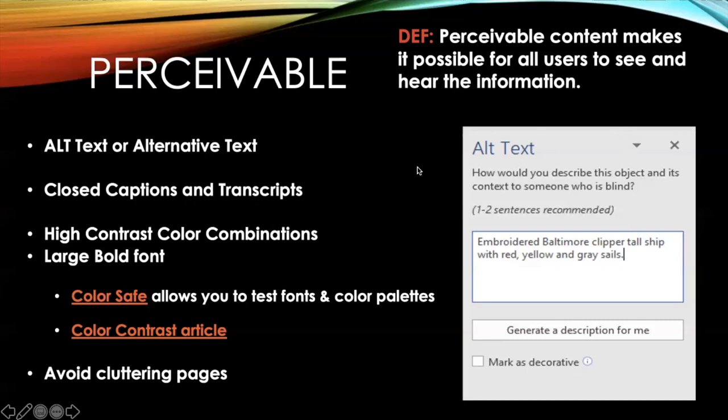Closed captioning is the visual display of the audio component of a video, which allows people to read spoken dialogue as well as non-speech information, like music or sound effects. Closed means the captions only appear when activated by the viewer. By including closed captions and a transcript of the video, you make the content available to people with disabilities and non-native speakers who may find it easier to read the information than hear it.